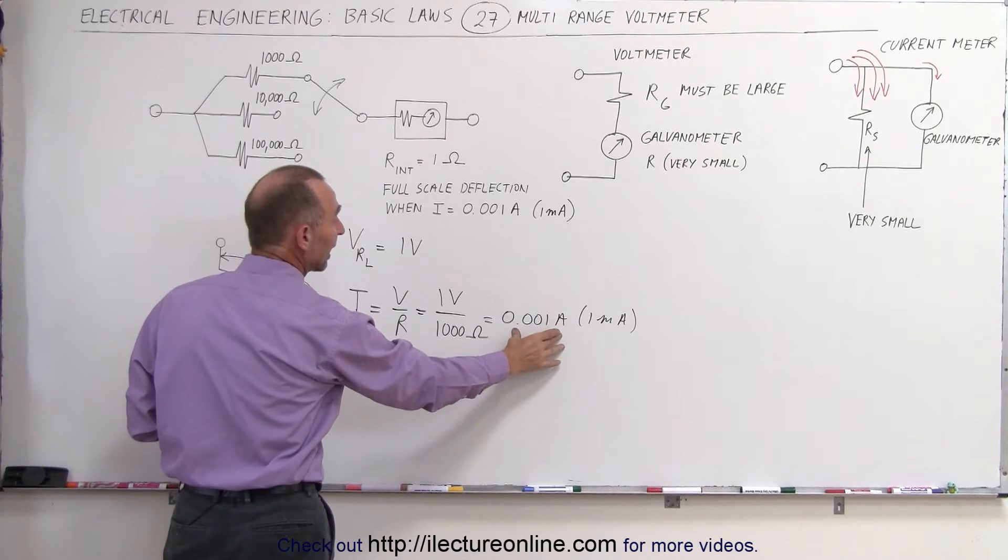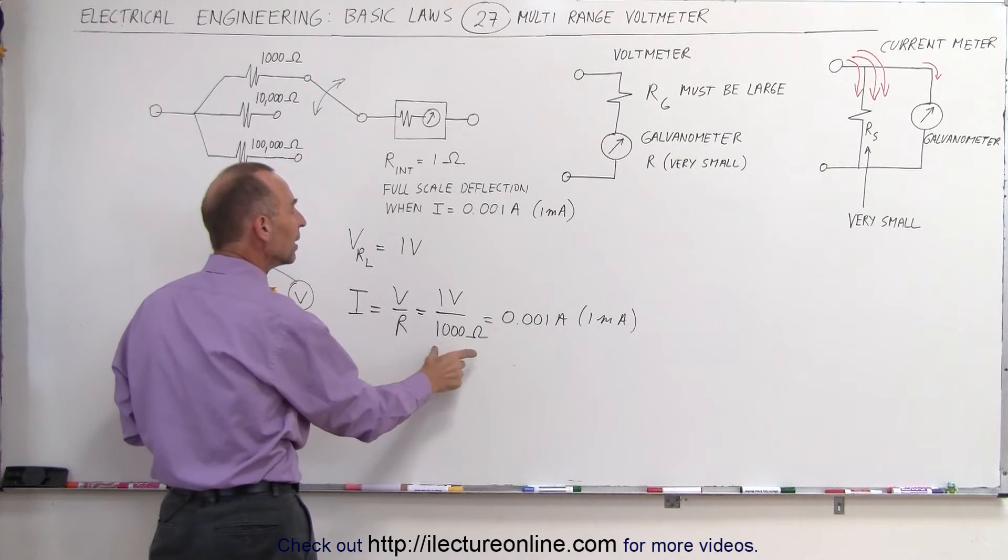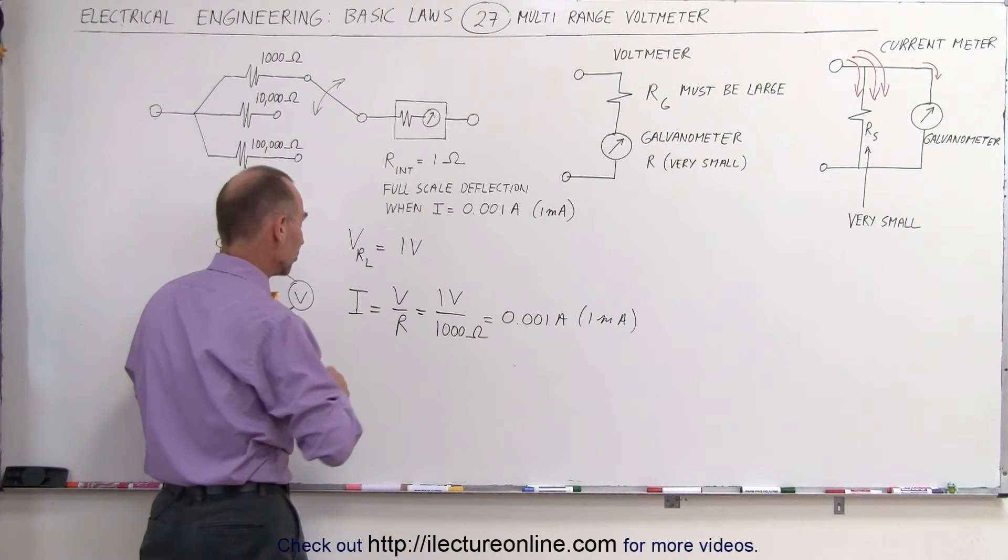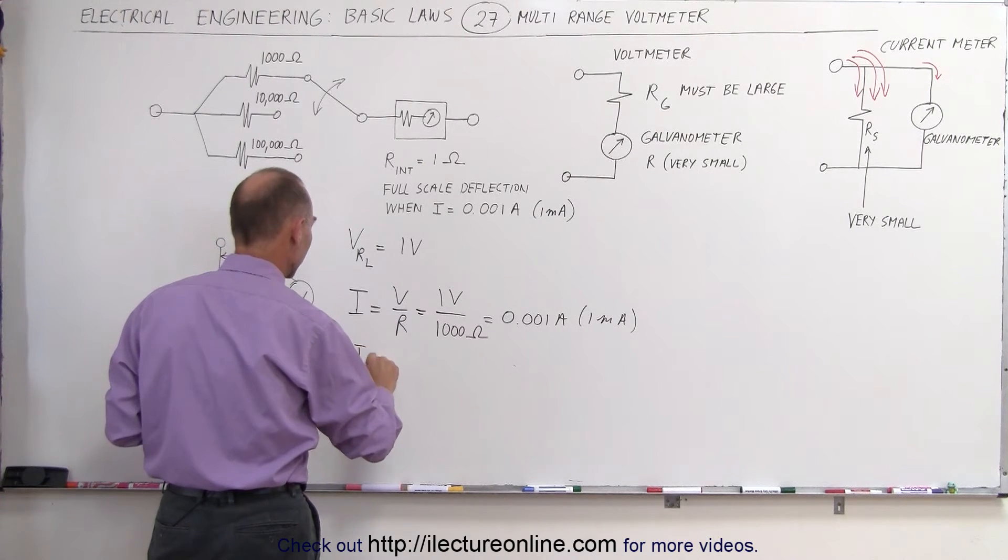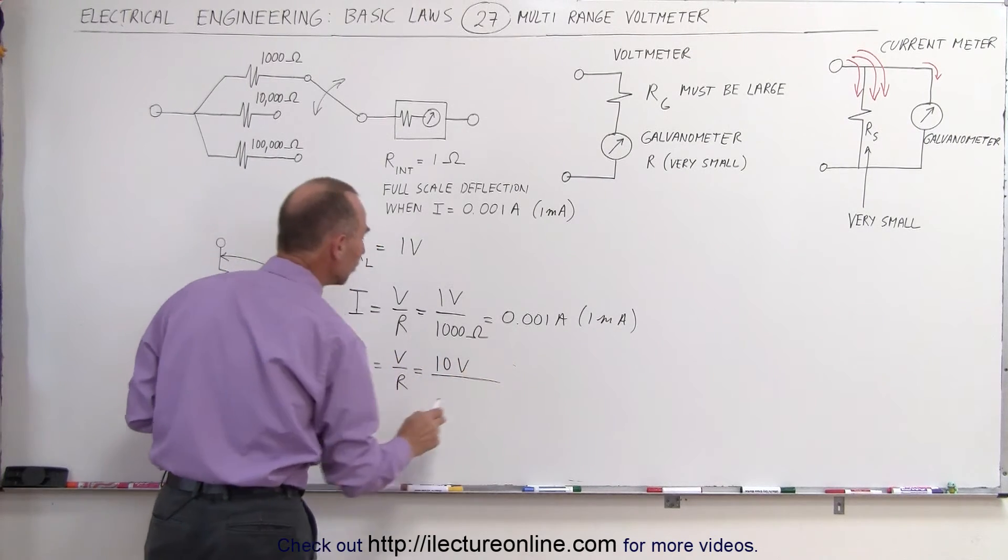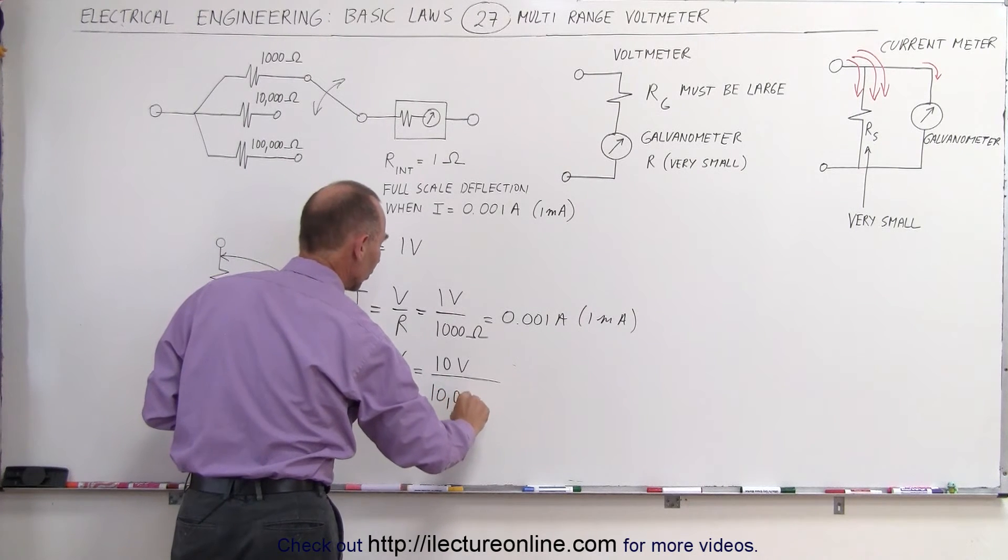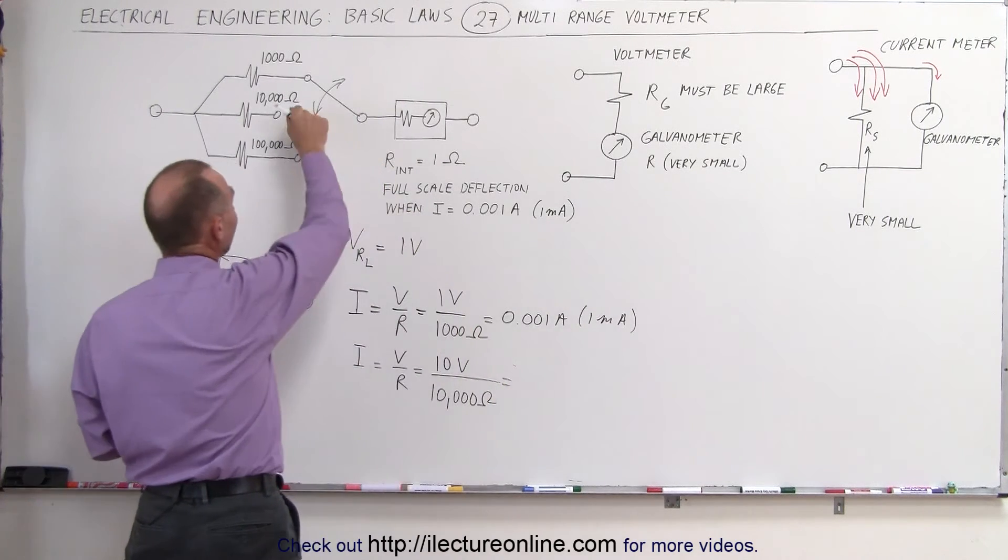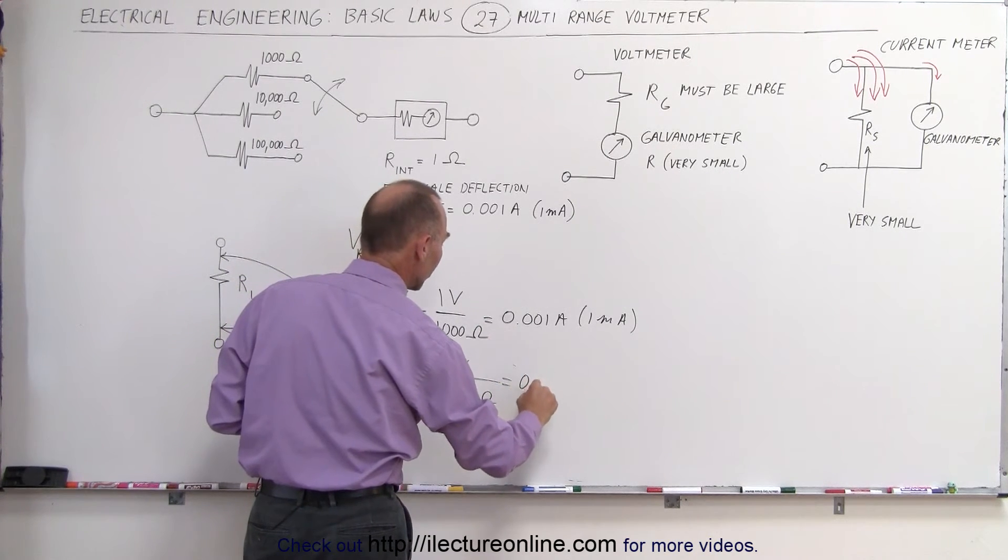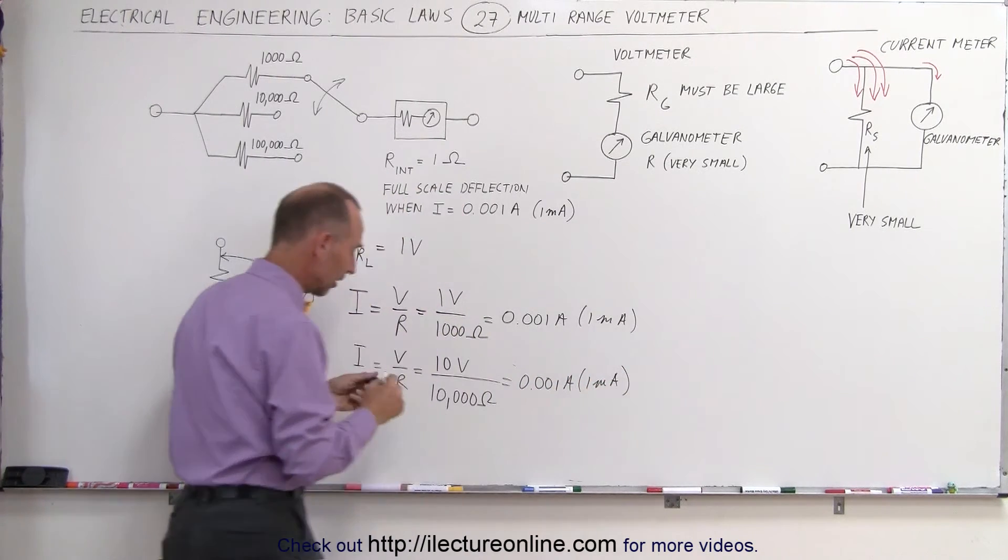What if we dial it into 10,000 ohms? Well, the maximum current that we can have is 0.001 amps, otherwise we would destroy the galvanometer, that means that we can actually, with a larger resistor, handle a larger voltage measurement. In other words, I is equal to voltage divided by R, but in this case if we want to measure 10 volts, we can do that by dialing in a resistor that's 10 times as big to achieve the same current. So if we dial into a 10,000 ohm resistor inside the voltmeter, then 10 volts divided by 10,000 ohms is equal to 0.001 amps, and again, that's 1 milliamp, or full-scale deflection.